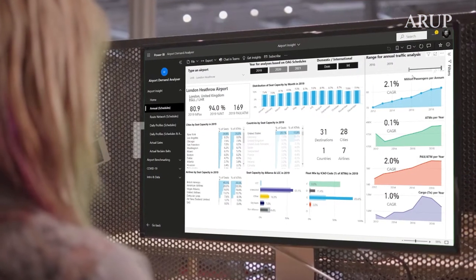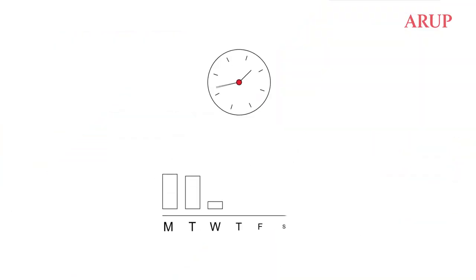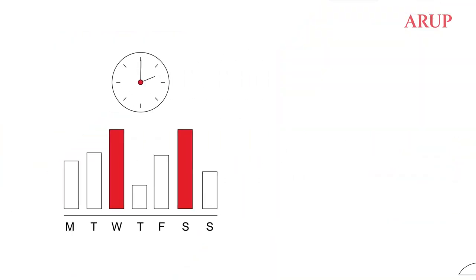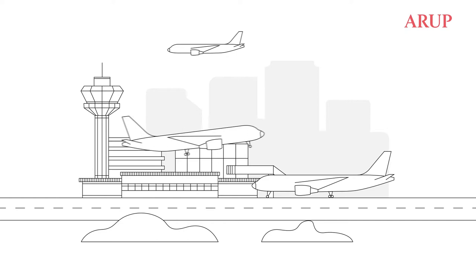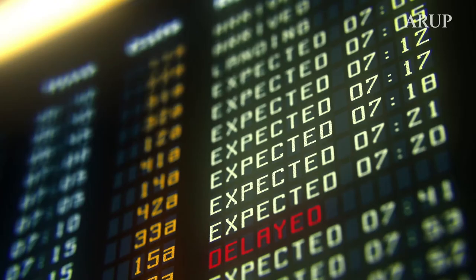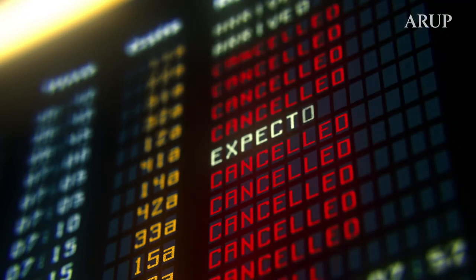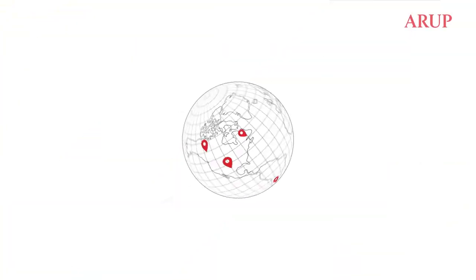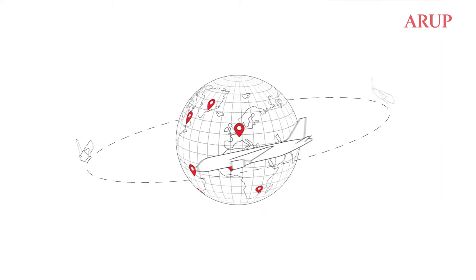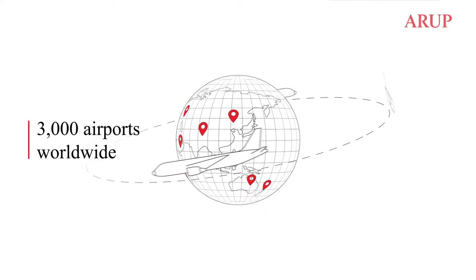It helps planners and operators to answer important questions like: which are the busiest days at each terminal? How do different airlines perform at my airport? How does my airport compare to others? And perhaps most importantly, is the airport performing efficiently? Airport Demand Analyzer produces insights by processing data from 3,000 airports worldwide, building an ever more detailed picture of the demand an airport faces.